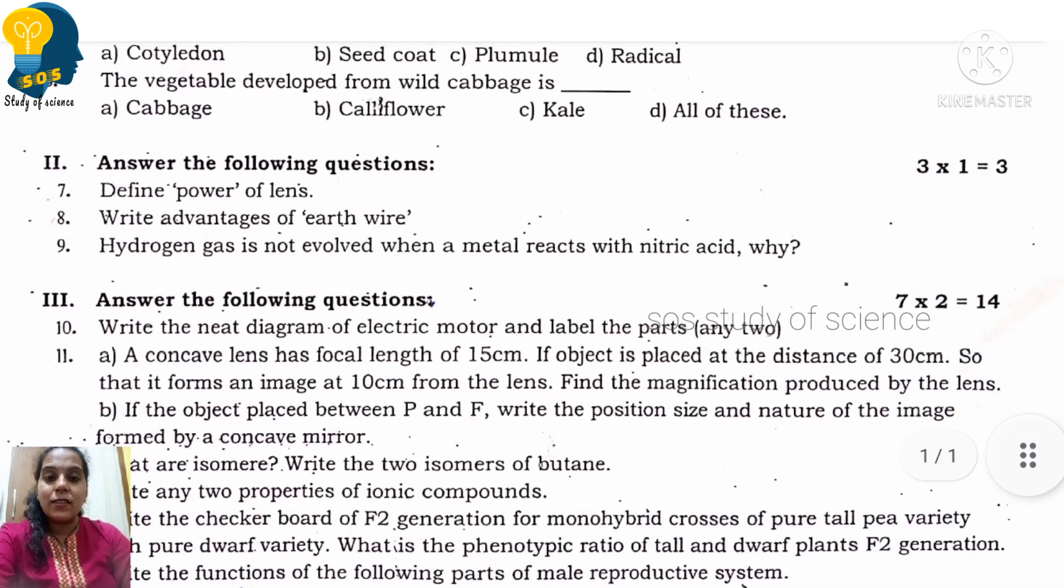So we have completed three marks and one mark questions. Let us now go for the two marks questions. Write the neat diagram of electric motor and label the parts. Any two parts label. In your final exam if they don't specifically ask for particular parts, then do label all the parts. Don't label wrongly. Electric generator, electric motor - whichever diagram you need to know, practice labeling 100%.